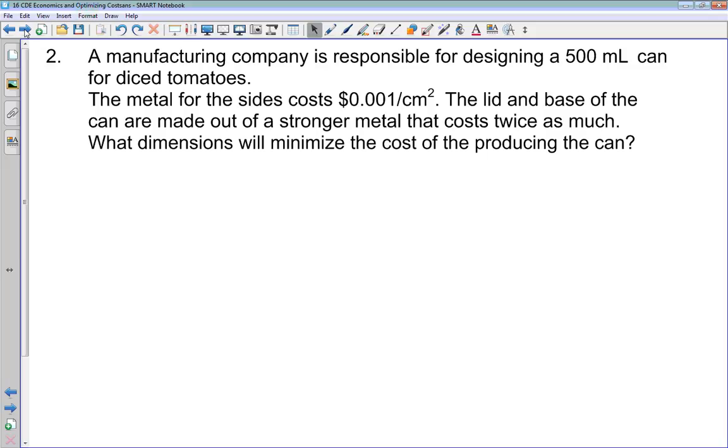So here's example two. A manufacturing company is responsible for designing a 500 milliliter can for diced tomatoes. The metal for the sides costs $0.001 per centimeter squared. The lid and base of the can are made out of stronger metal that costs twice as much. What dimensions will minimize the cost of producing the can?